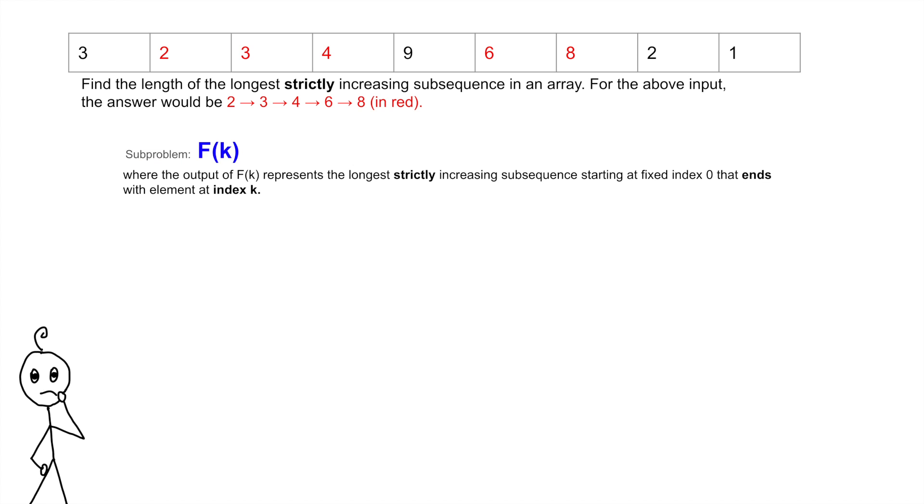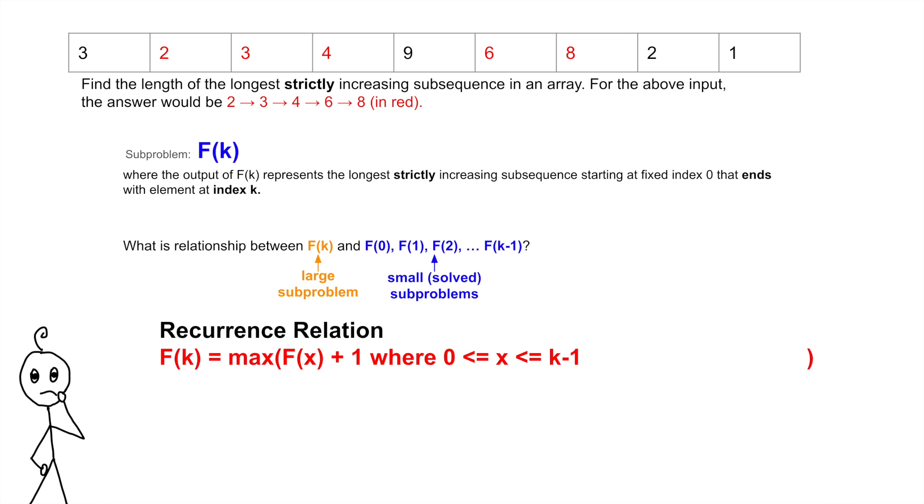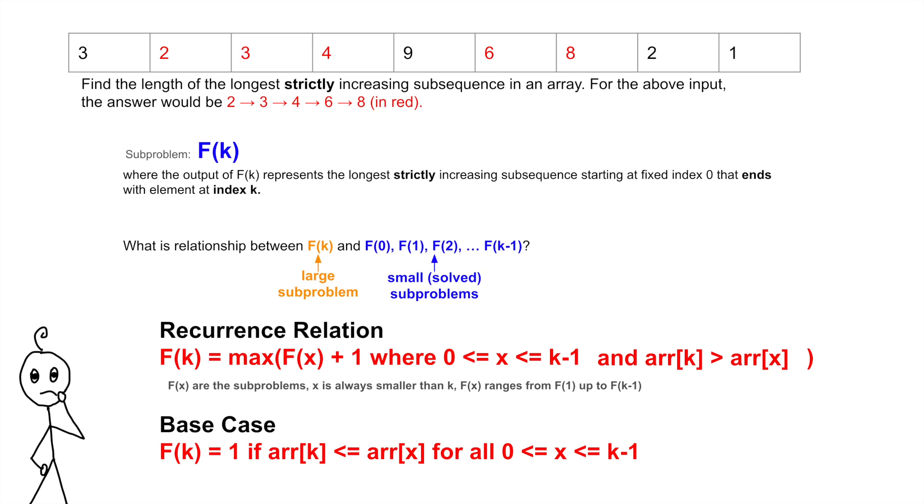Just like before, consider the relationship between the larger sub-problem and the smaller sub-problems. Notice that the optimal longest sub-sequence of f of k can be and must be built from one of the sub-problems. Therefore, we come to our final recurrence relationship. Note that f of x just represents the smaller sub-problem. Of course, we only consider a smaller sub-problem if the array at k is greater than the array at x as this indicates that the new rightmost element is larger than the largest element from before. The base case of the recurrence relation naturally follows. After we have solved for all values of f of k, where k ranges from 0 to the end of the input array, the largest f of k represents the LIS of the entire array, which is our desired answer.